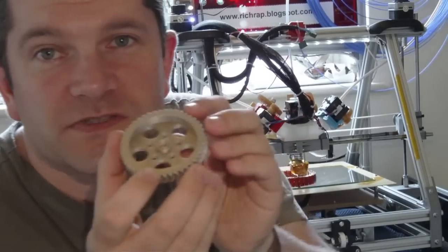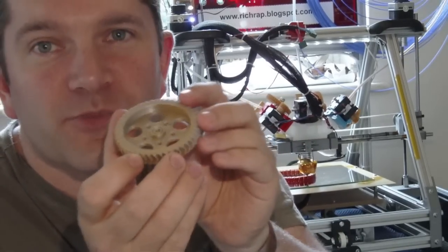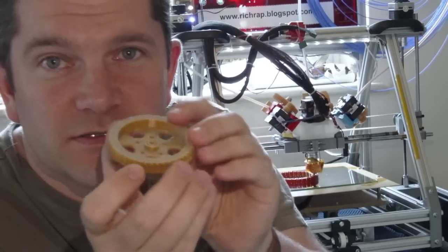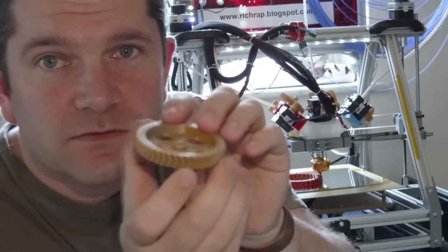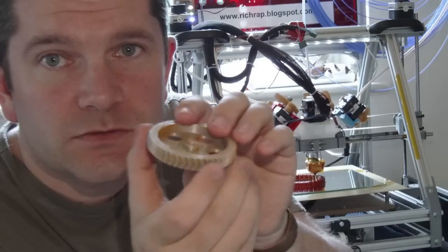And this one's pretty cool. This is a herringbone gear for an extruder. And as you turn it you'll see hopefully it goes from silver to orange and back again.